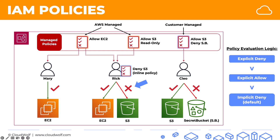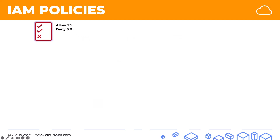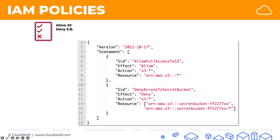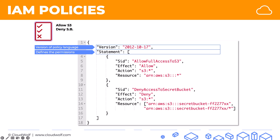Something to keep in mind: this policy evaluation logic is important. Let's look at a specific policy in action. Here is our policy that we want to create, and we're going to go through it line by line. The first line is the version of the policy language — it's pretty much always going to be the same: 2012-10-17. Next is the statement that will define the permissions, and it has two parts.